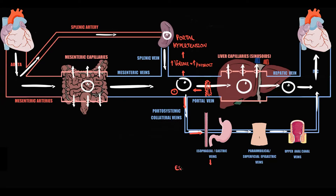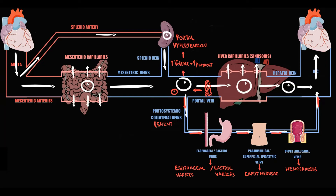Distension of esophageal veins and gastric veins causes formation of esophageal varices and gastric varices. Distension of paraumbilical and superficial epigastric veins causes formation of caput medusae on the anterior abdominal wall. Distension of upper anal canal veins causes formation of hemorrhoids. The problem with varices is that the more distended they become, the higher the chance of rupture.